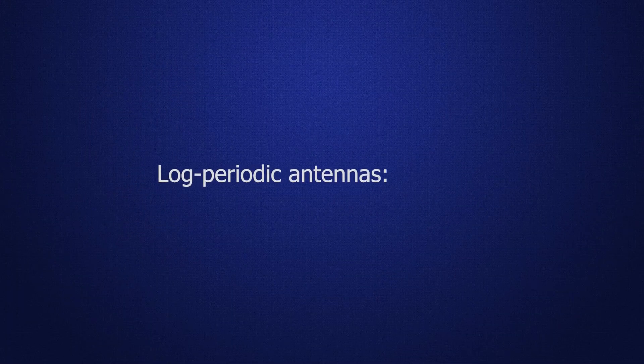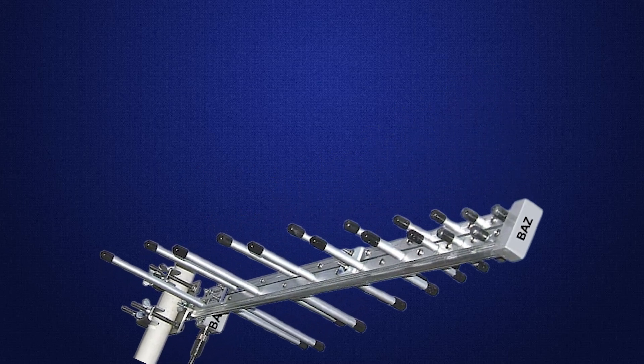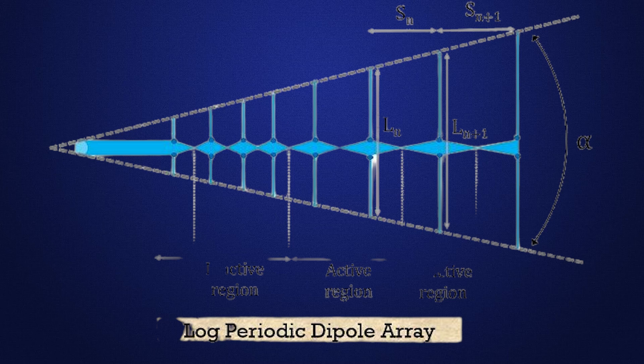Log periodic antennas. These antennas are less common than parabolic antennas, but they have a wider coverage area. They are often used in mobile phone networks.